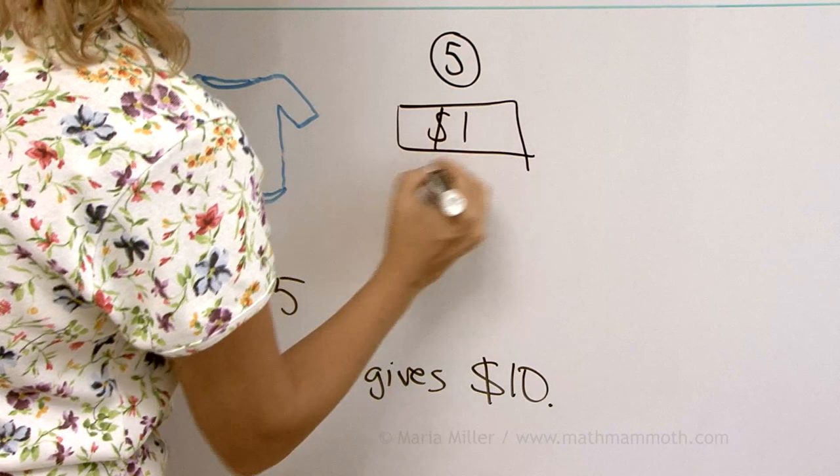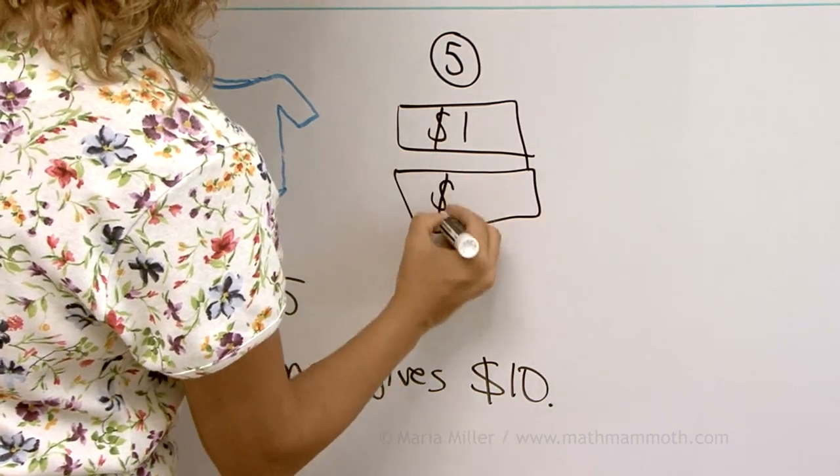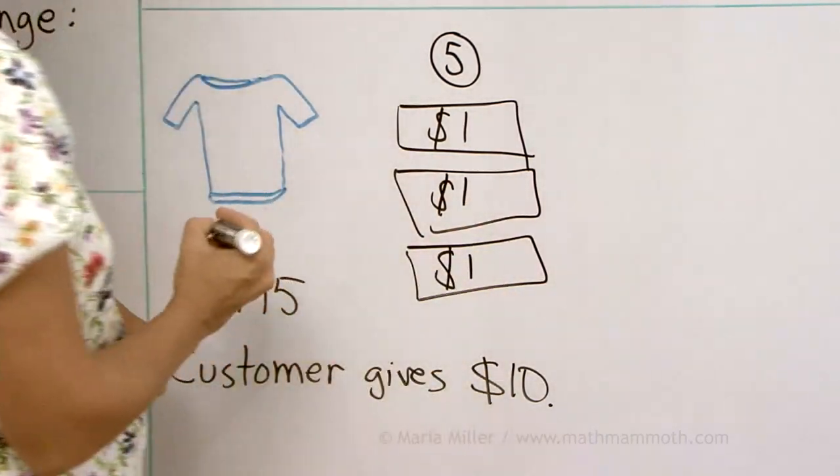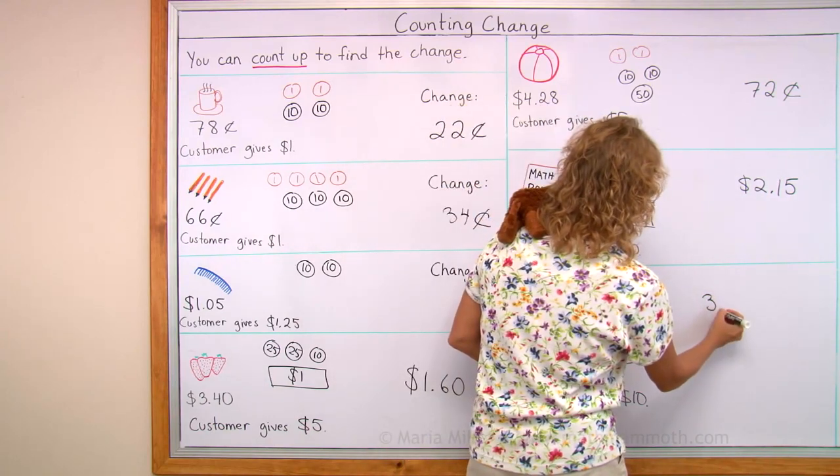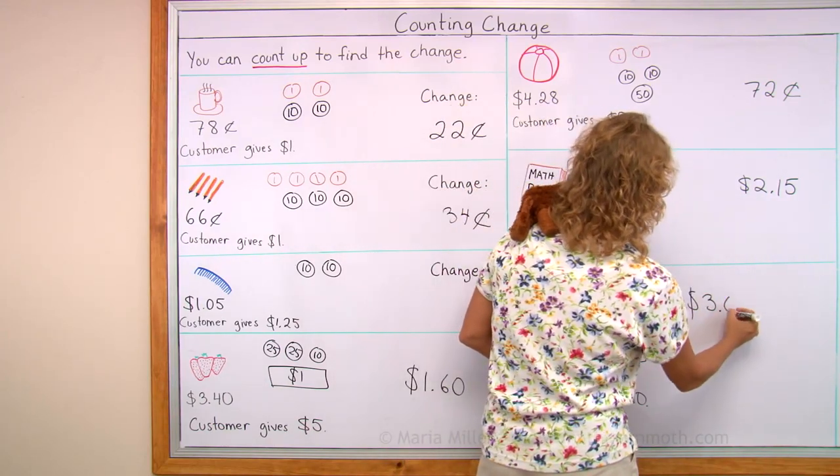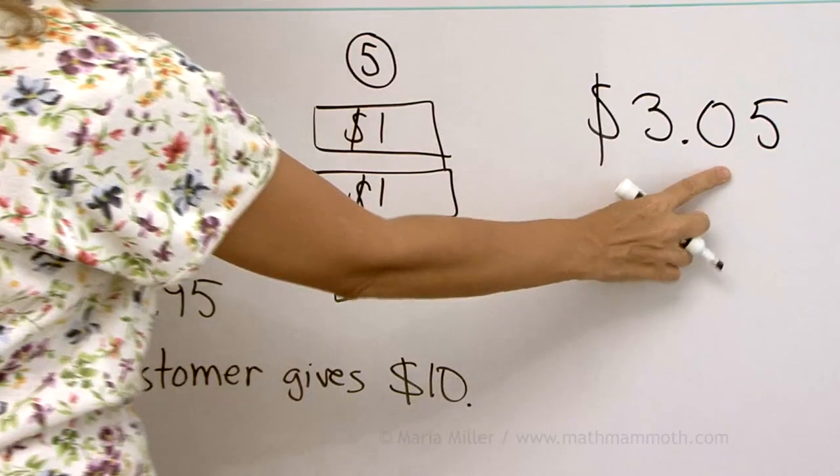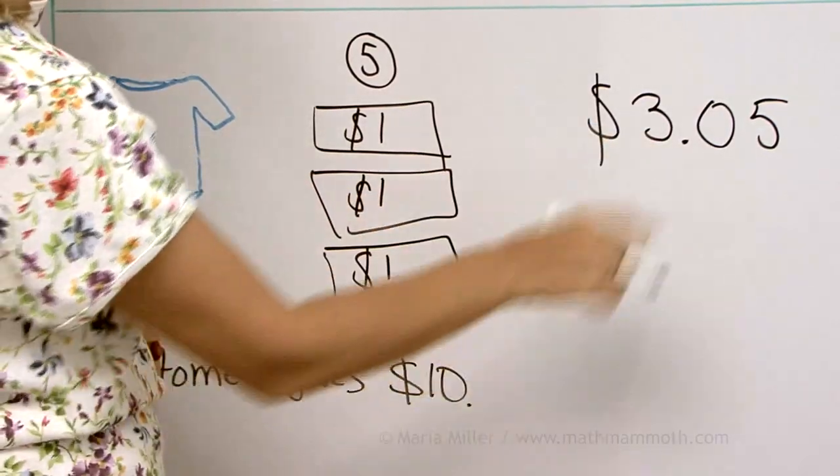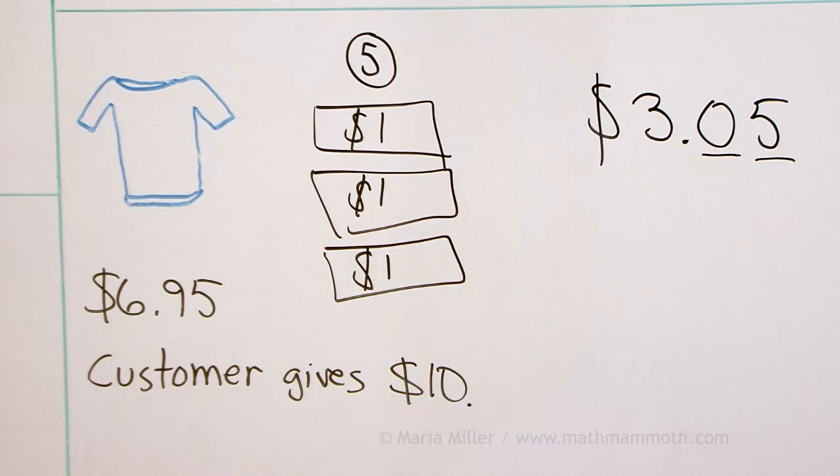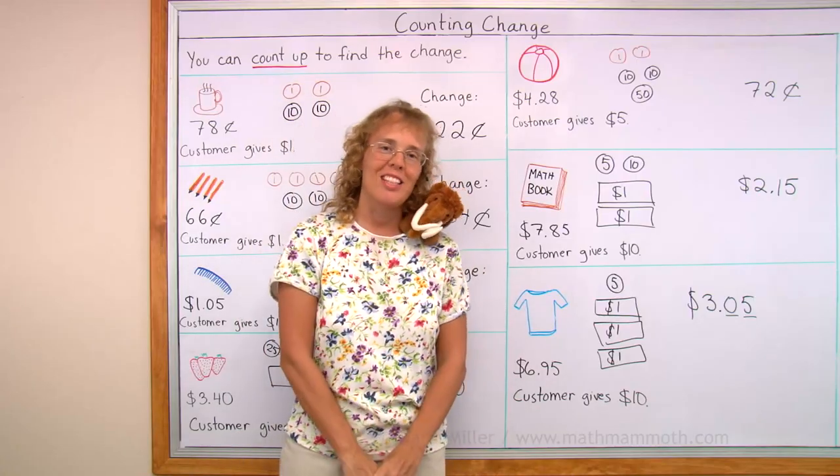So three of these. There. The change is $3 and $0.05. Notice we need to put a zero here. We always have to have two digits for the cent amount. Well done with this lesson.